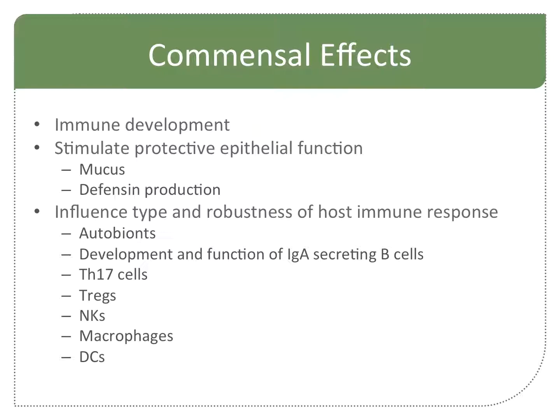The commensals do immune development — your immune system is recognizing those bacteria, and that's one of the ways it develops. They're also stimulating mucus production and defensin production. The defensin cytokine is interleukin-22, and what gets us interleukin-22 is vitamin D. So if your vitamin D levels are low, your defensins are going to be low, and you'll start getting overgrowth of different microflora on your skin or your gut or both. Vitamin D → interleukin-22 → defensins: that's the pathway.